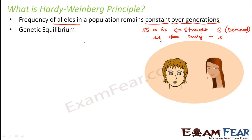So all these are the basic concepts. Here in this population of two people, we see that this girl has got curly hair, meaning the genotype is small s small s, and this girl has got straight hair. So this can be heterozygous or homozygous. Let us assume that this is homozygous. So we have two alleles: capital S and small s. Let us denote the frequency of capital S by p.